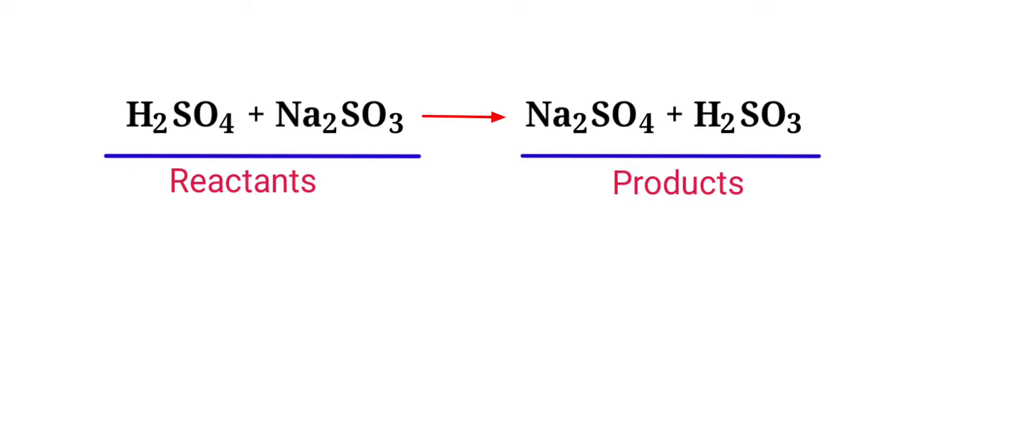In this equation, the reactants are Sulfuric Acid and Sodium Sulphite, and the products are Sodium Sulphate and Sulfurous Acid.